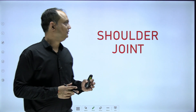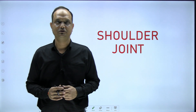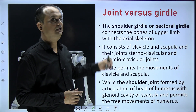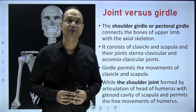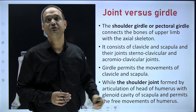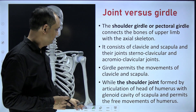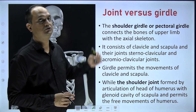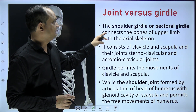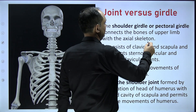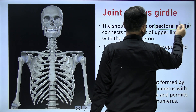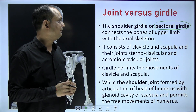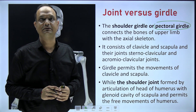Hello students, today we'll discuss the shoulder joint. Before going to the shoulder joint, you should have the idea about the difference between the shoulder joint and shoulder girdle — it's a very important question for your exam. The shoulder girdle is also known as the pectoral girdle, and this pectoral girdle connects the bones of the upper limb with the axial skeleton.